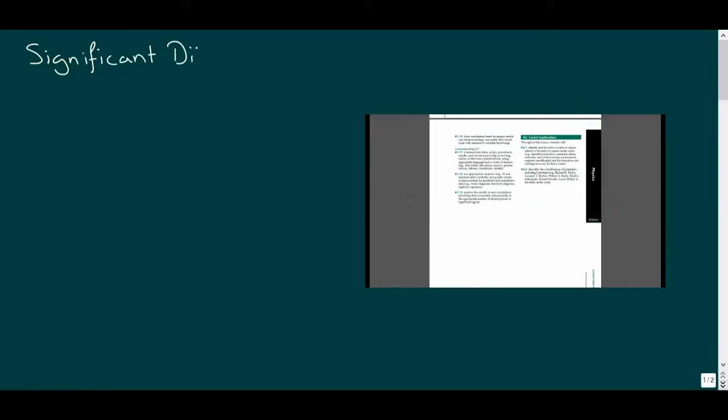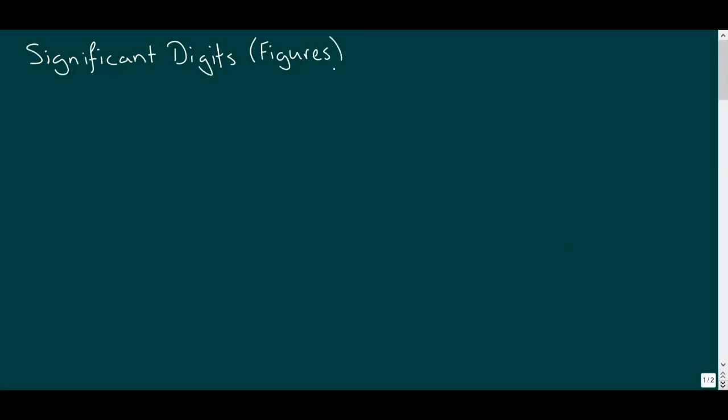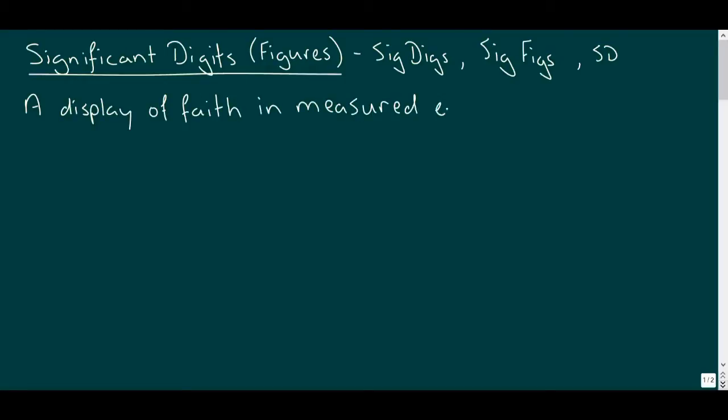An expectation in this course is for students to be able to use and interpret significant digits or significant figures in measurements and calculations. These are sometimes referred to as sig digs or sig figs, but I'll use SD as a short form in our notes. In essence, sig digs communicate the confidence an experimenter has in their measured data.